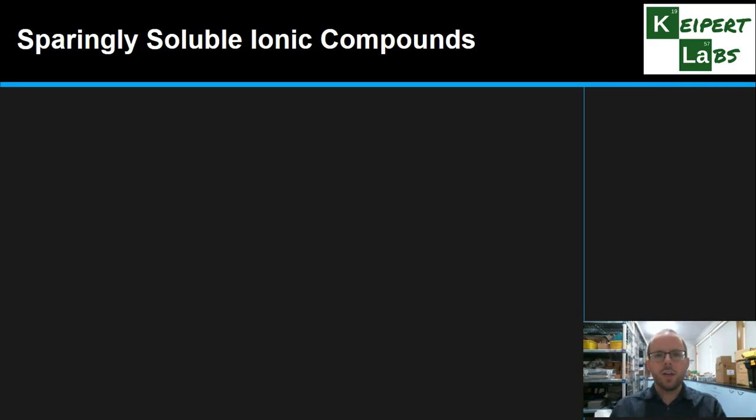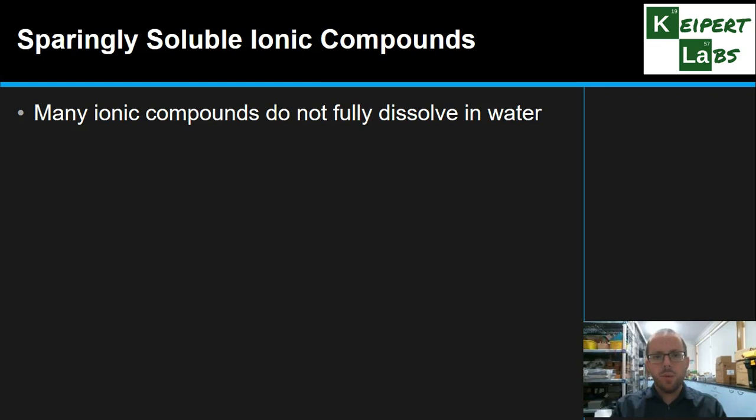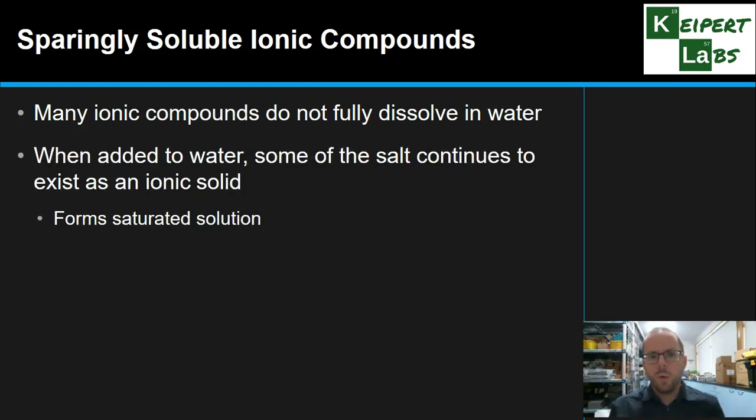Sparingly soluble ionic compounds. We've talked in the past about this idea of solubility. We recognize that substances dissolve to different amounts in water. Some are really soluble, some are insoluble, and some are kind of in between. But what we recognize is that there's lots of ionic compounds that don't fully dissolve in water. When we put them into water, some of the salt will be there as an ionic solid. It will be crystals that will sit at the bottom or float suspended in the solution. We have this saturated solution. We've dissolved as much as we can, and some of it will still be there.